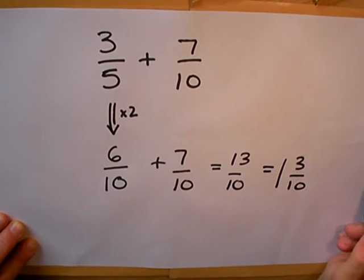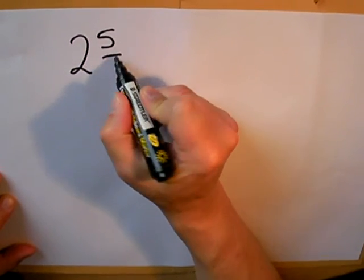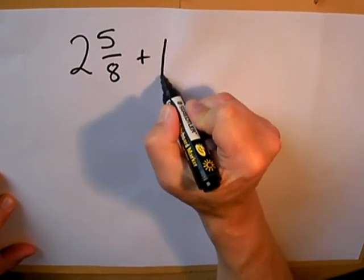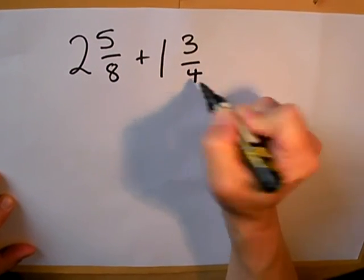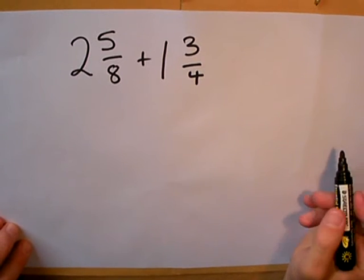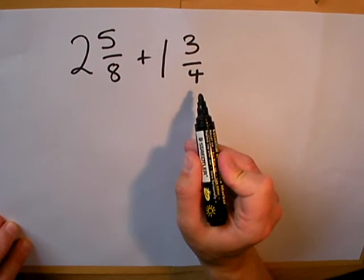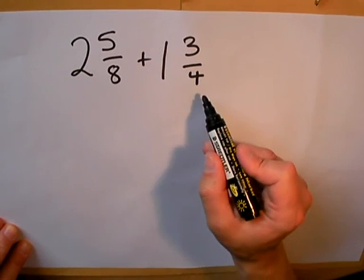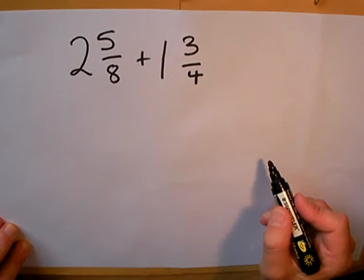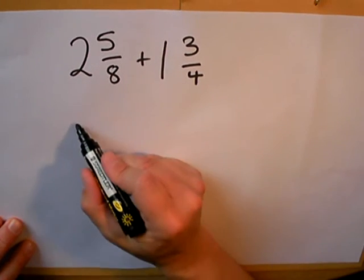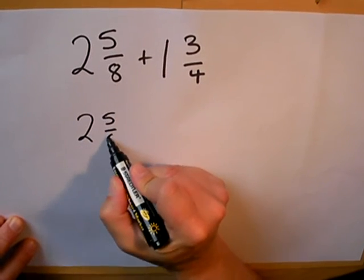I can do the same thing with mixed numbers. Here's an example: two and five eighths add one and three quarters. This time I need to change the second fraction. I need to change quarters into eighths. Again, I can easily do this by just simply multiplying by 2.